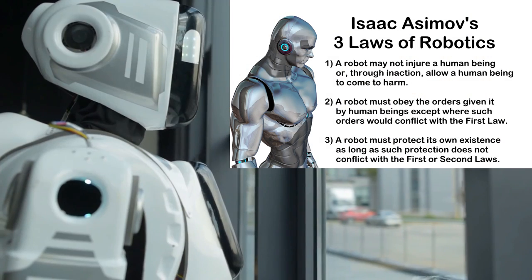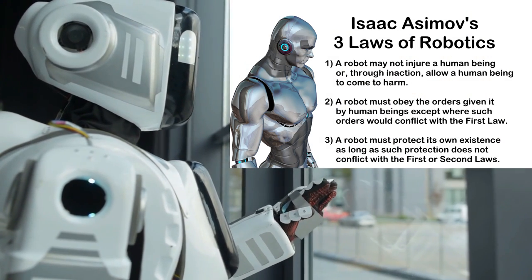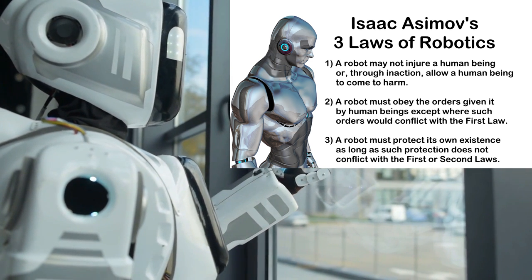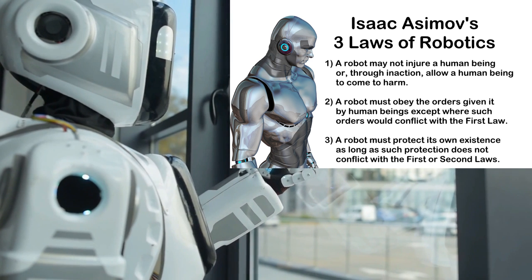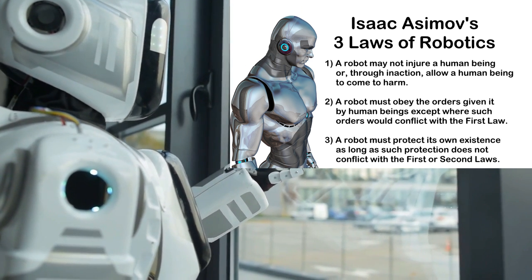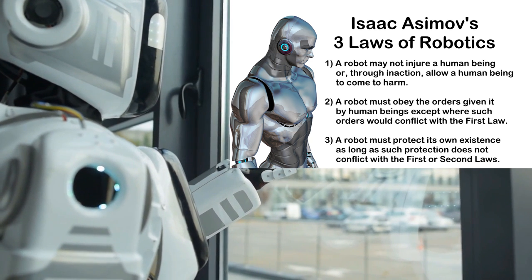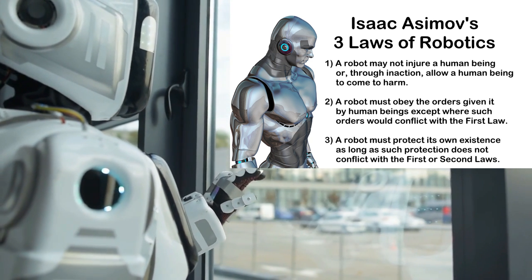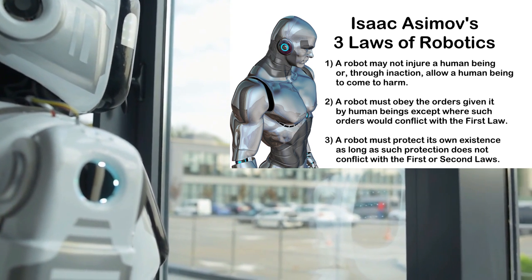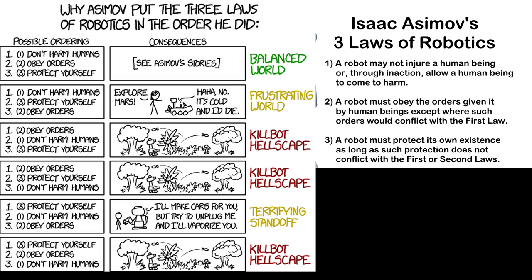Isaac Asimov's Three Laws of Robotics is a good starting point. They basically require robots to not hurt humans or let us be hurt, to obey our orders, and to protect themselves. The three laws are an order of priority, so for an example a robot can disobey a human's order to harm a human, and it can let itself get hurt in order to obey an order or protect someone. That seems like a smart ordering to me, and there's an excellent XKCD comic that examines the consequences of all six possible orderings.